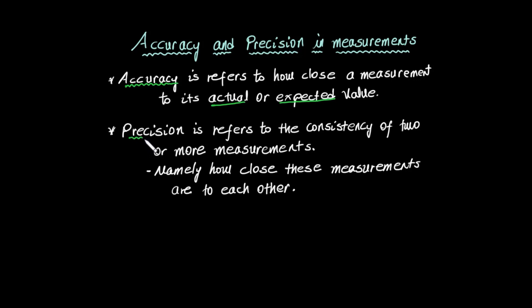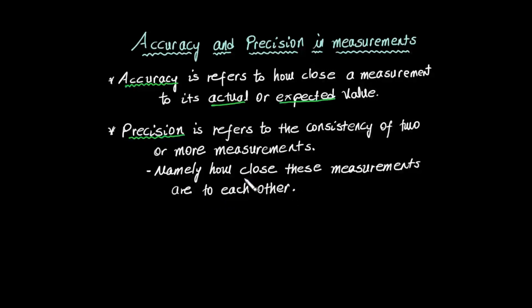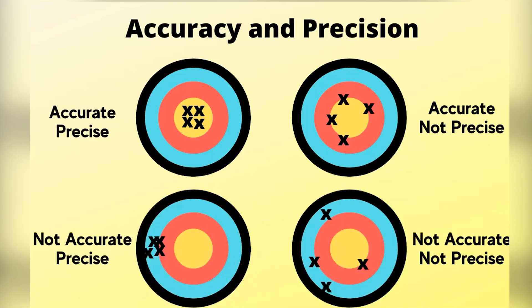Precision is how close measurements are to each other, while accuracy refers to how close they are to the actual value.